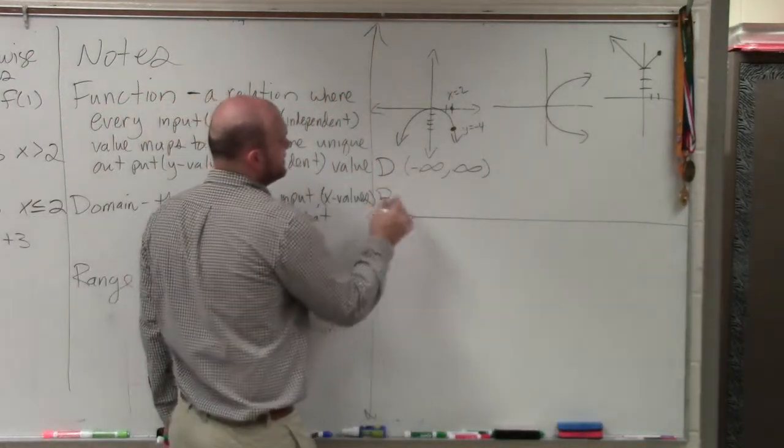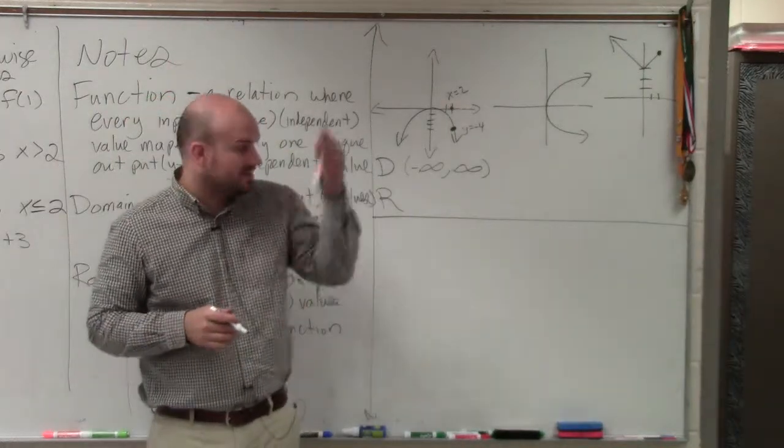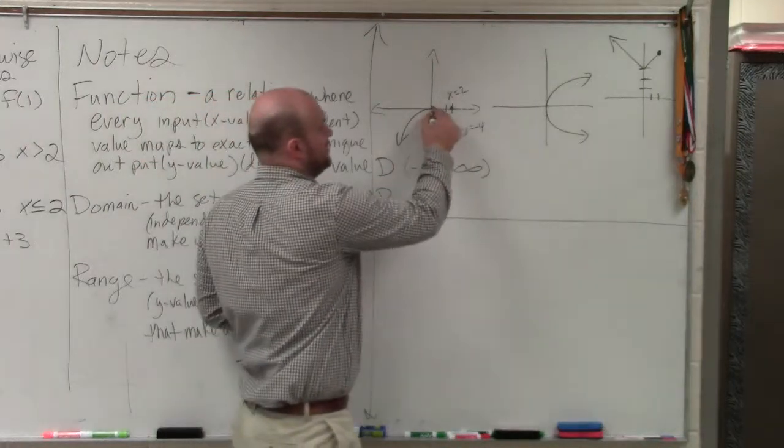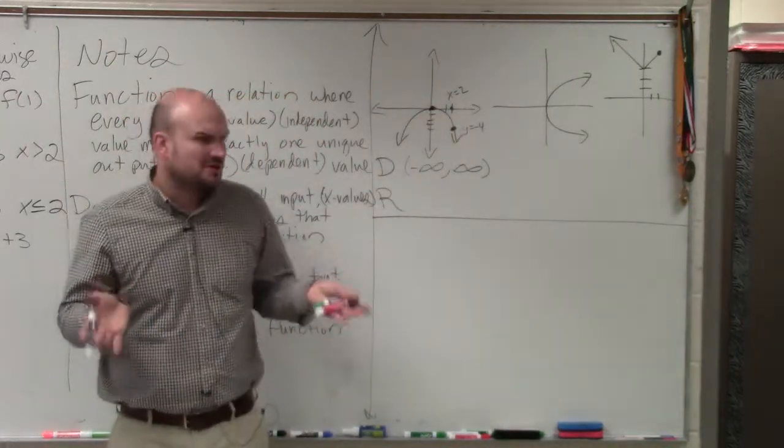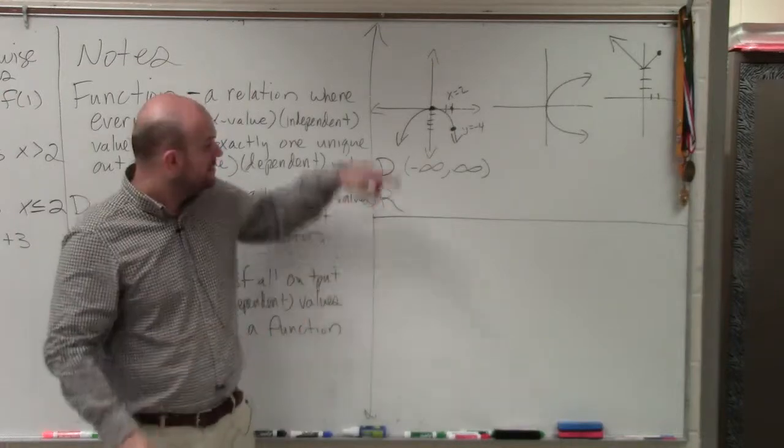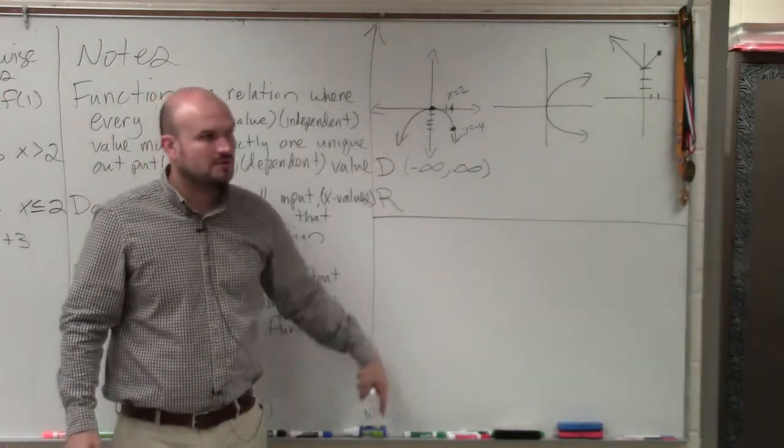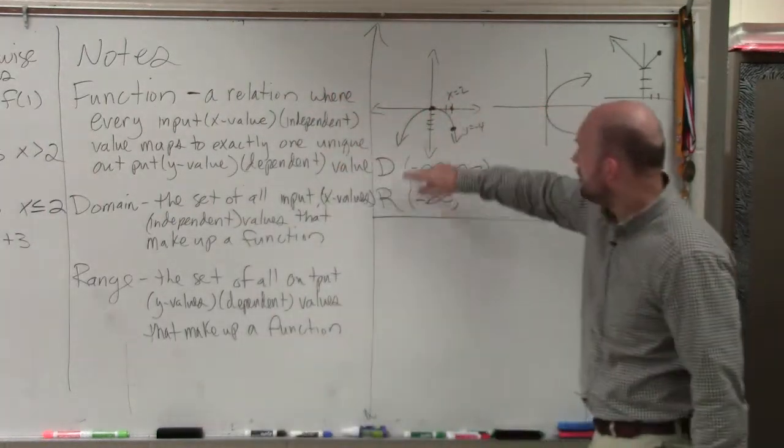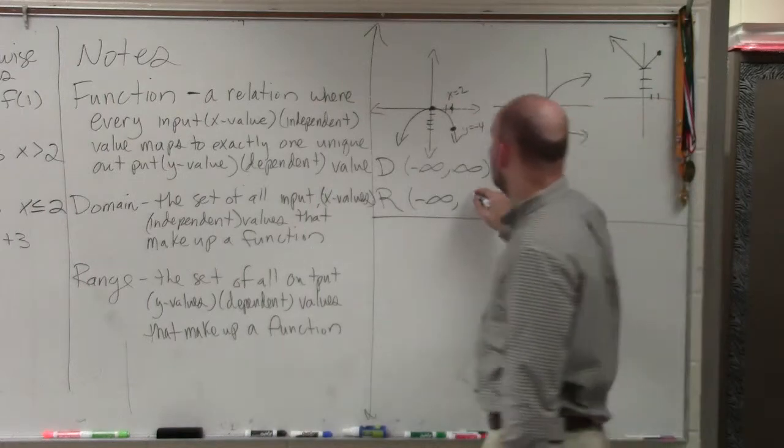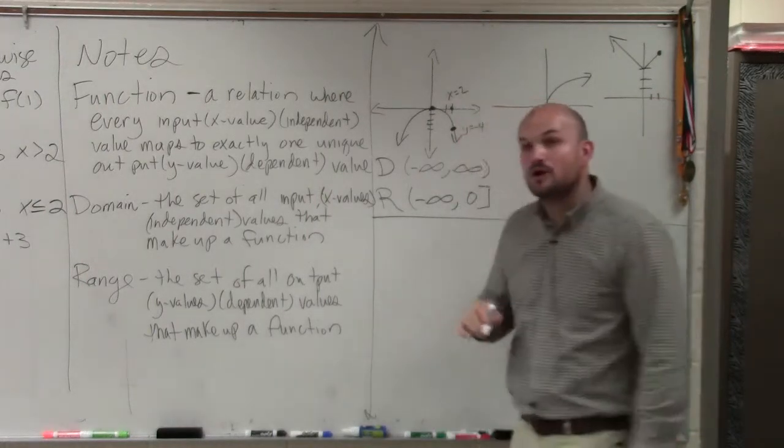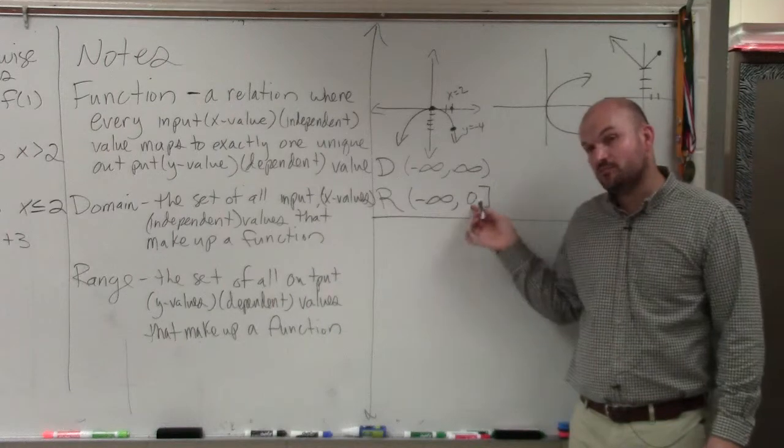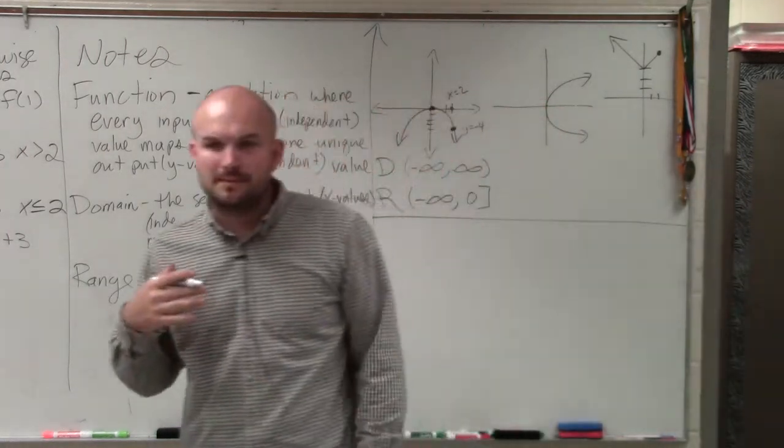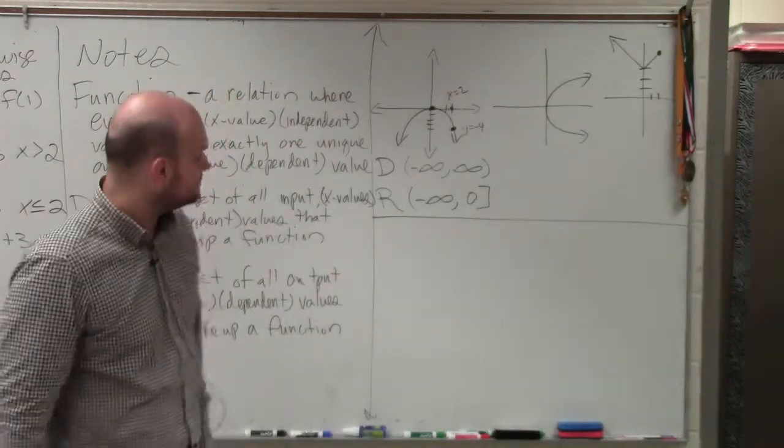The range is the set of all y values. Now we're looking for the y values up and down. You can see that this graph kind of plateaus, it has a maximum point. So first thing we always want to do is the lowest point, see how far the graph goes down. So how far does this graph go down? Negative infinity. And then it's going to go all the way up to zero. Now zero is included in this graph, so I'm going to use a bracket rather than a parenthesis. And we'll talk more and more about this once we get into a little bit more difficult problems.